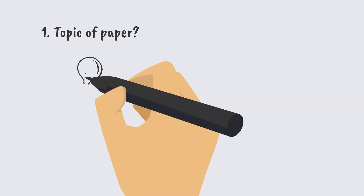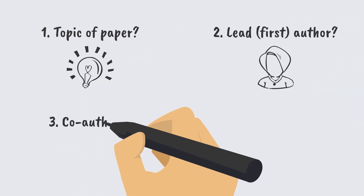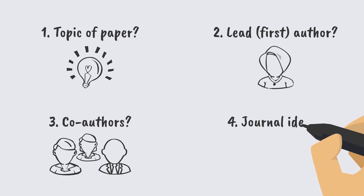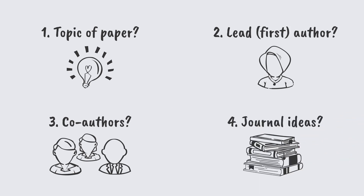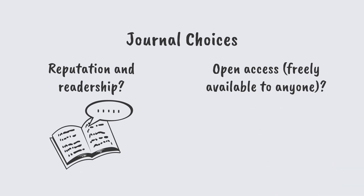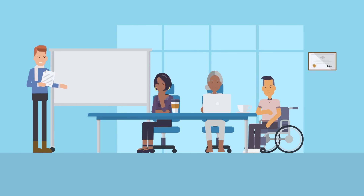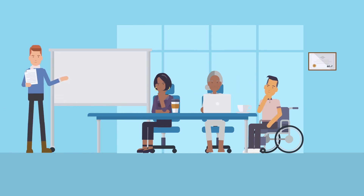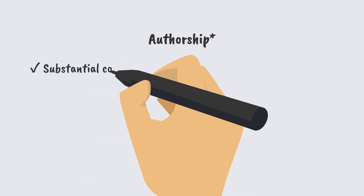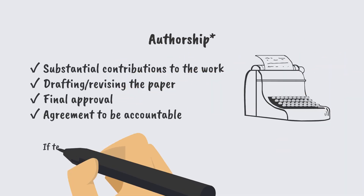Chances are you'll meet about the paper's topic and main points, who will lead the writing, how everyone on the team can contribute, and which journal you'd like to share your work in. You may want to think about how reputable the journal is and if it's open access. Everyone should understand what the publication process will look like from the start. Ideally, authorship and its differences with acknowledgement should be discussed at this stage or earlier.